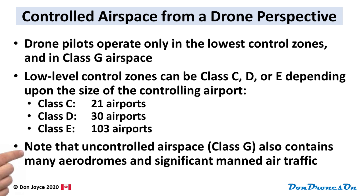Note that uncontrolled airspace — class G — also contains many, many aerodromes, heliports, grass fields, all sorts of stuff, and lots and lots of manned air traffic. Just because you're flying in class G airspace does not mean you won't encounter manned aircraft.